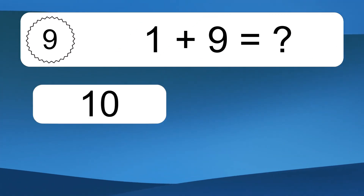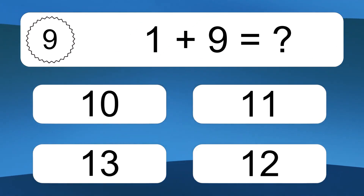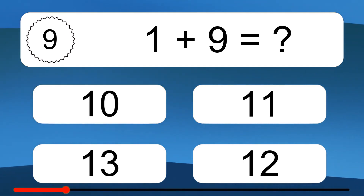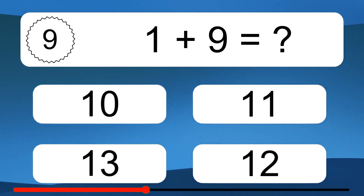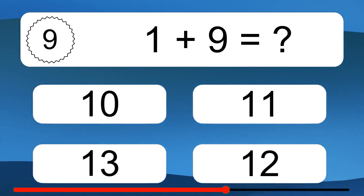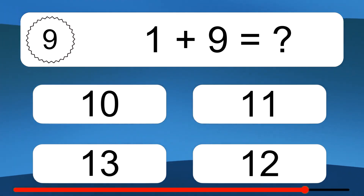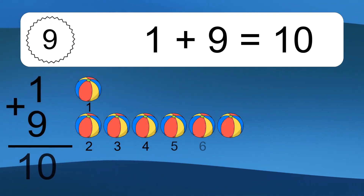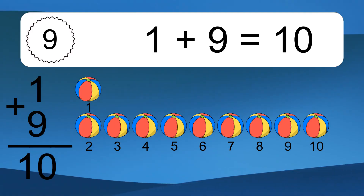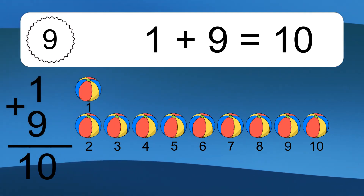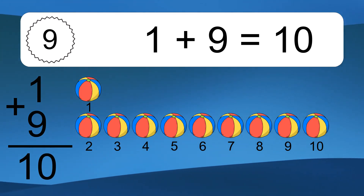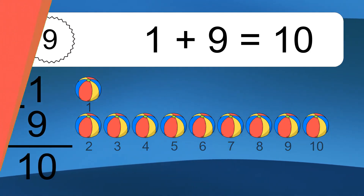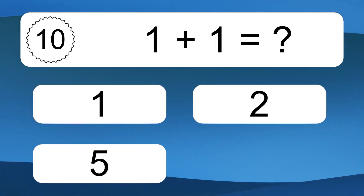1 plus 9 equals what? 1 plus 9 equals 10. Let's count it: 1, 2, 3, 4, 5, 6, 7, 8, 9, 10.